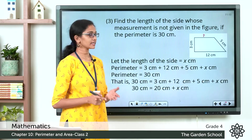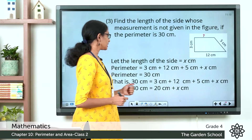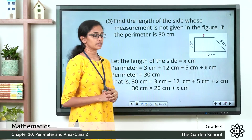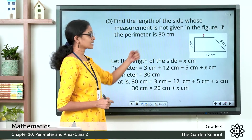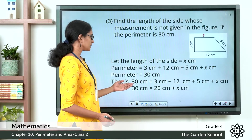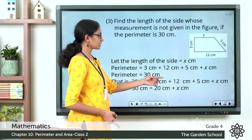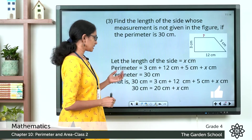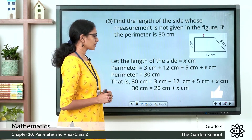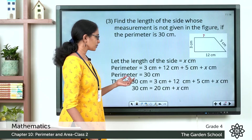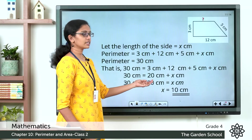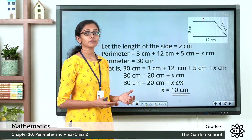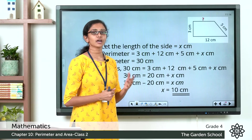Let's see the steps one more time. Let the length of the unknown side be x cm. The perimeter is equal to 3 cm plus 12 cm plus 5 cm plus x cm, which equals 30 cm. So 30 minus 20 is equal to x, and x is equal to 10 cm. I hope you understood how to find an unknown side length when the perimeter is given.